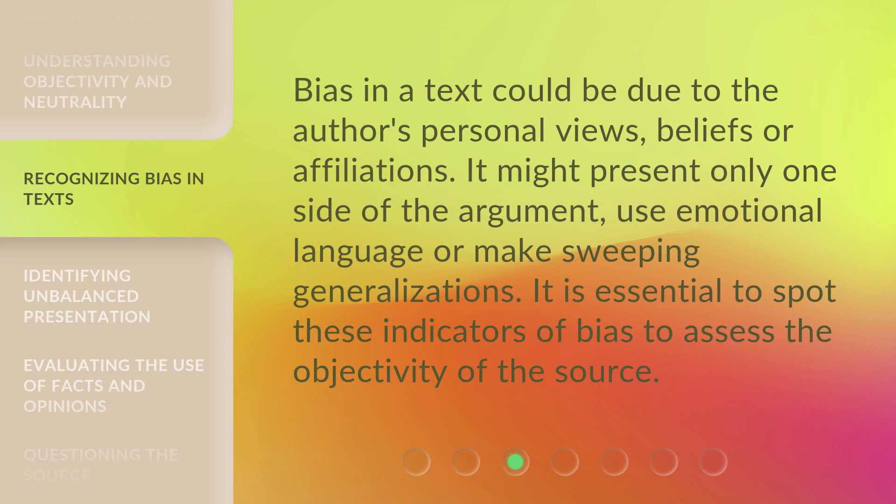Bias in a text could be due to the author's personal views, beliefs, or affiliations. It might present only one side of the argument, use emotional language, or make sweeping generalizations. It is essential to spot these indicators of bias to assess the objectivity of the source.